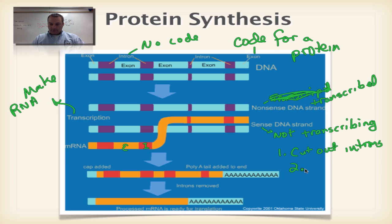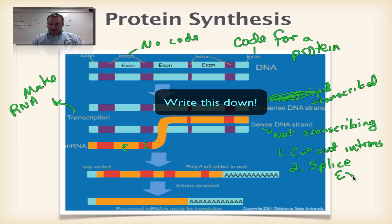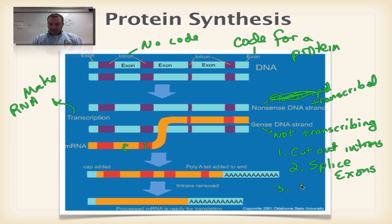Step number two, we need to splice or tape together the exons. Step number three, we got to add a cap, and the cap is basically a backwards guanine base. And then number four, we've got to add a tail. This tail is a poly A tail. Poly means many, so we're going to have lots of adenines put together. What we've made here so far has no cap, no tail, still has introns, haven't put the exons together. This is actually called pre-mRNA. It's not ready to leave the nucleus. We've got to dress it up.